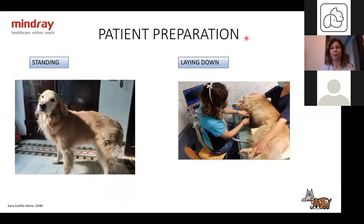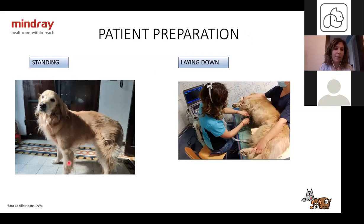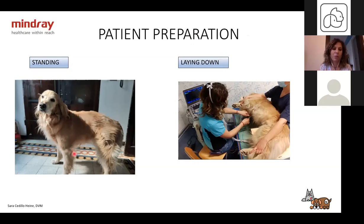First, we need to position our patient. This is my dog Google. On the left side you can see we can do it standing, or on the right side laying down. When standing, we position ourselves on the left side of the animal with the ultrasound machine there. For the right side we put our arm underneath the chest and scan from the left side, then reposition the transducer on the left side of the dog.